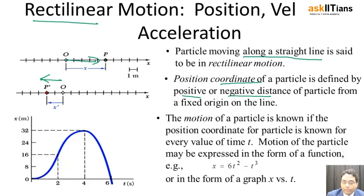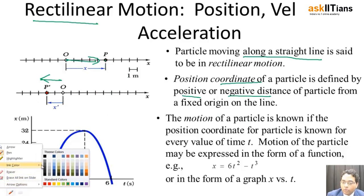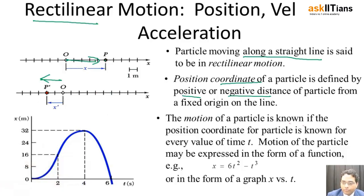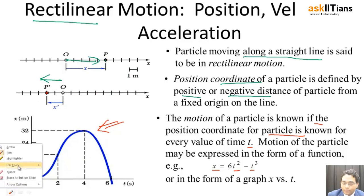The motion of a particle is known if the position coordinate is known for every value of time t. We can express the position as a function of t — for example, x varies like t squared minus t cubed. That can be plotted out as a graph.